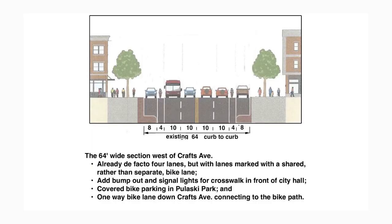The next image is that first 64-foot wide section, the area west of Crafts Avenue. The design that we're proposing, which was drawn this way by Tool Design, is already de facto four lanes. Anyone familiar with the area knows there are four lanes of travel, although they're not clearly marked. So we would have those four lanes marked, and we would add a painted shared lane for bikes on both sides of the street.